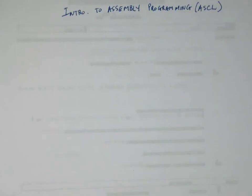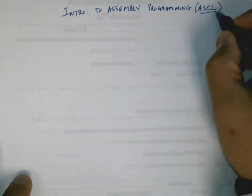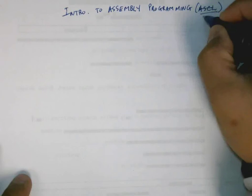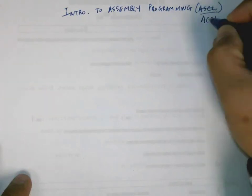Welcome to the lesson on assembly programming. The particular language we're going to use here is the one defined by ACSL. I think I misspelled this—it should be A-C-S-L, the American Computer Science League.